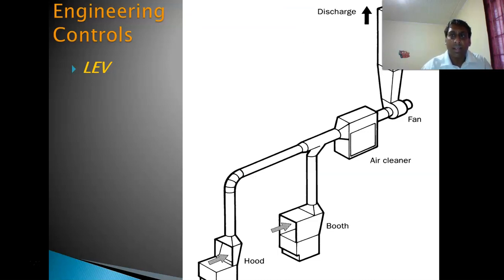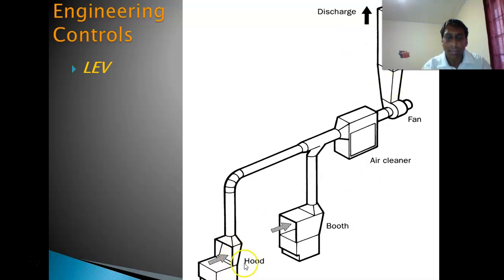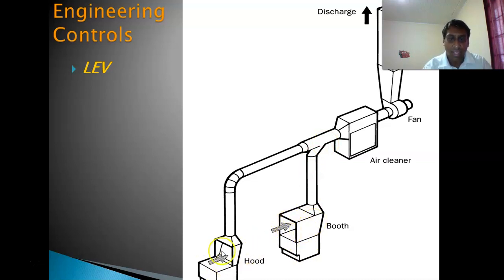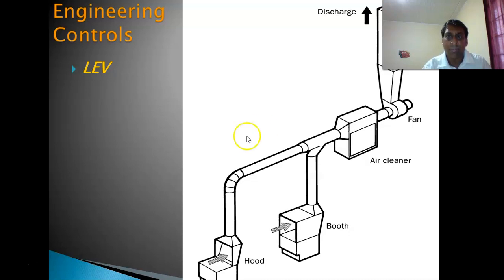If you have never seen an LEV system before, the system would have a collection hood just above your process. You then have the ducting material, which could lead into a booth — all of these are different types of hoods. You'll have an air filter, which is run by a fan, and then the air is exhausted to the outside atmosphere. That's putting it very mildly, but those are the basic ideas.